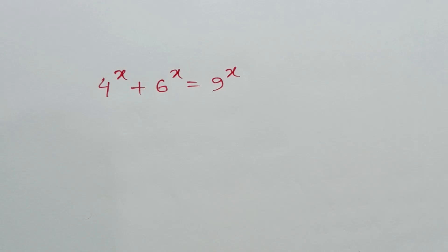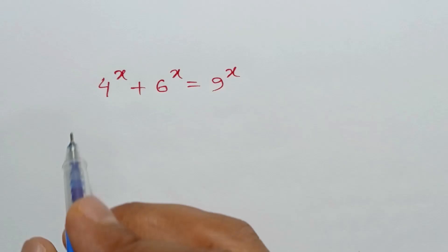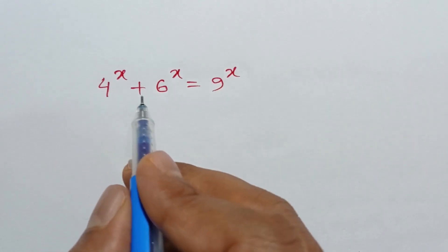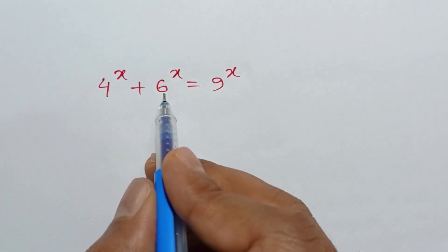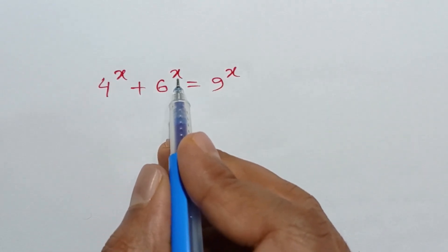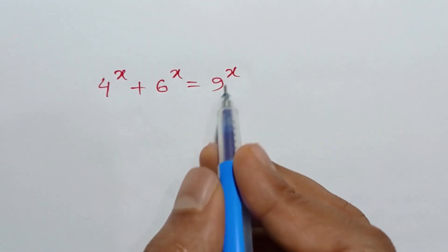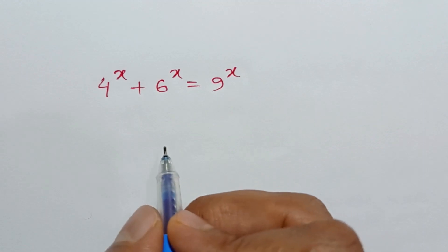Hi everyone. I am going to show how to solve 4 to the power x plus 6 to the power x is equal to 9 to the power x.